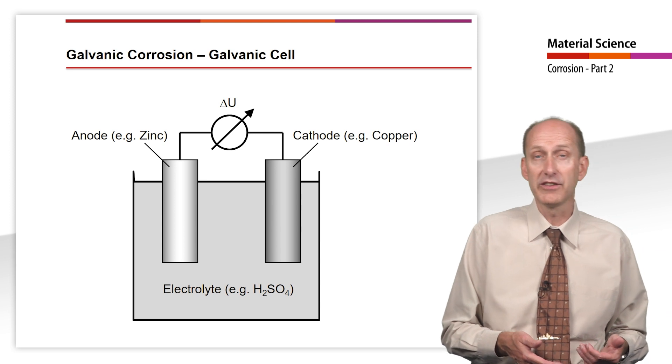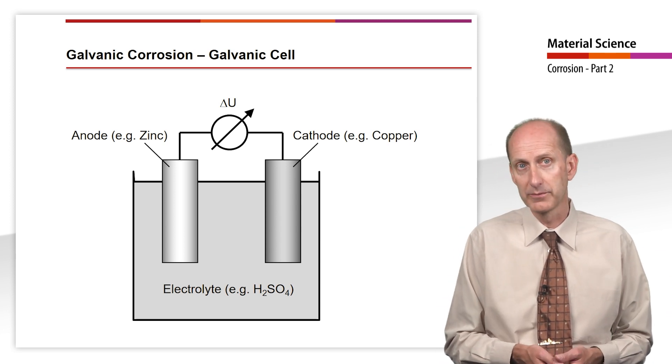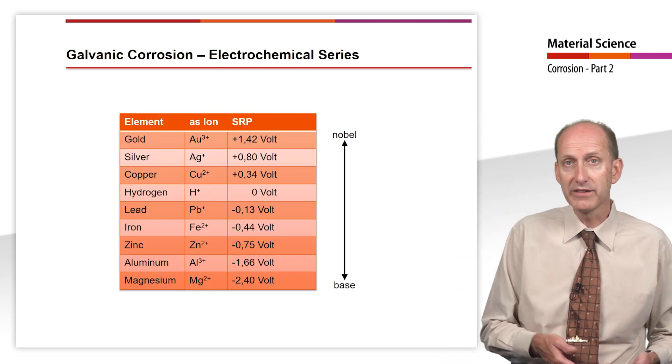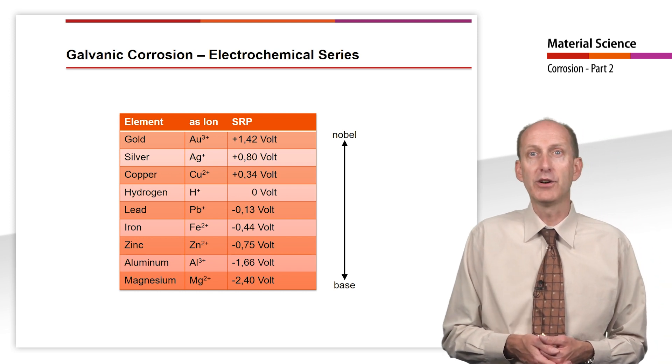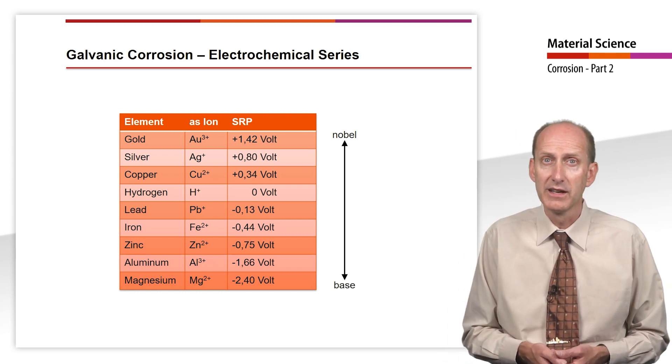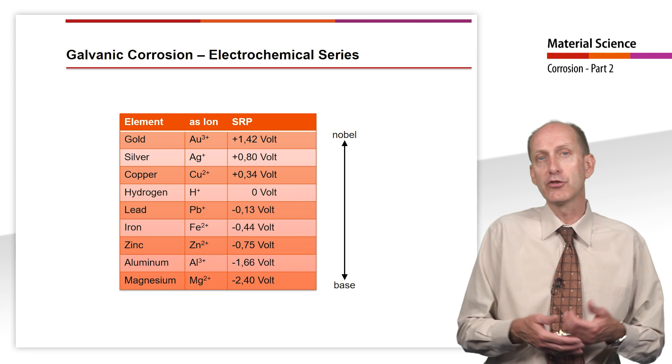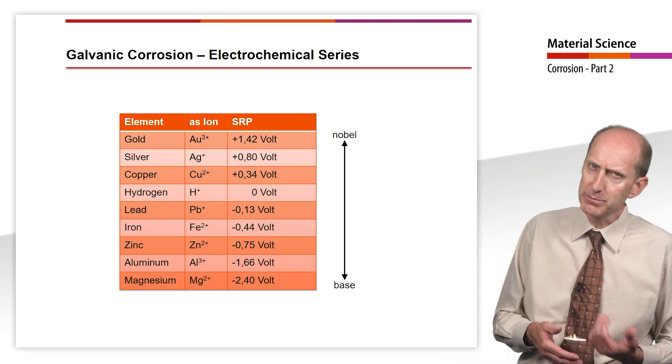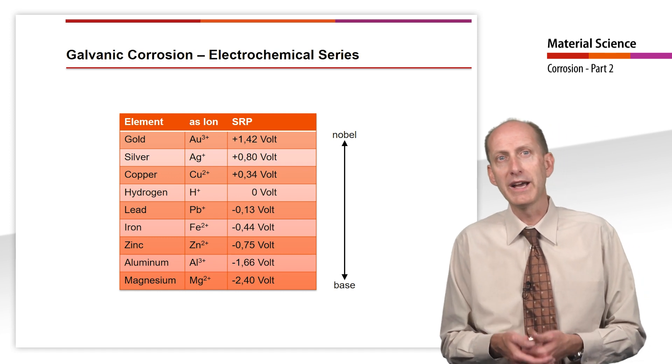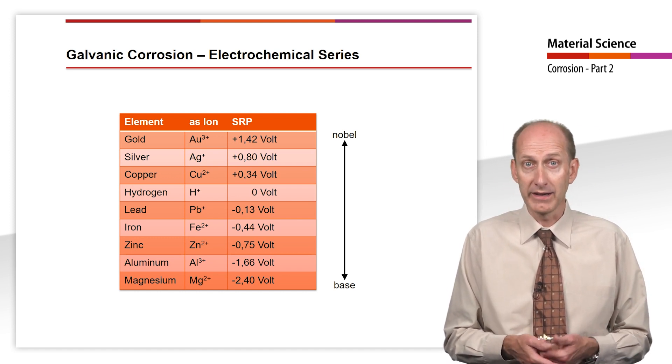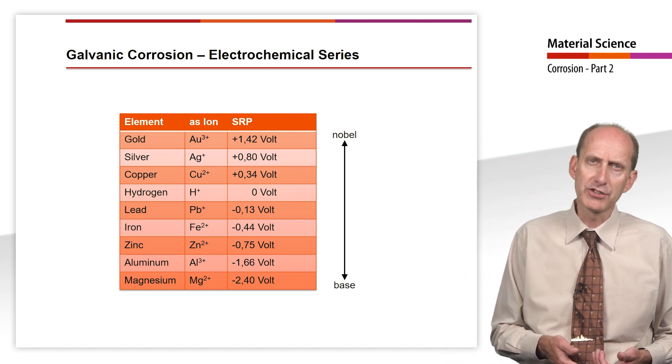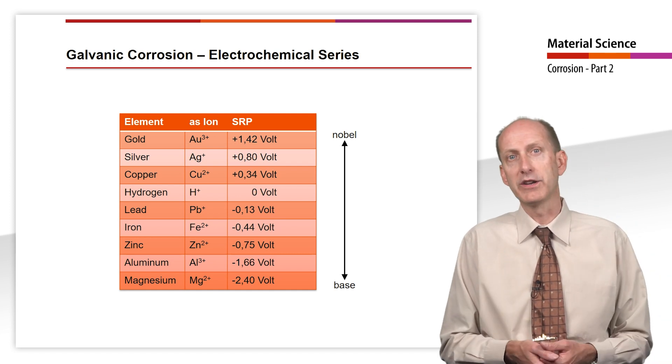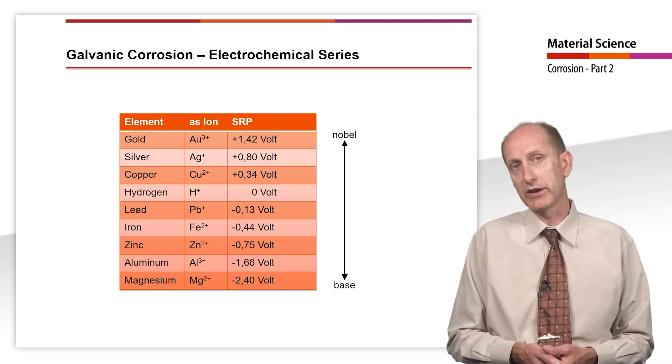In the process, the less noble conductor is eroded and dissolves. The magnitude and direction of the voltage depends on the material of the conductors and their place in the electrochemical series. In the electrochemical series, each material is connected to a hydrogen electrode via an electrolyte, and the voltage then produced is written down in order of magnitude and direction.